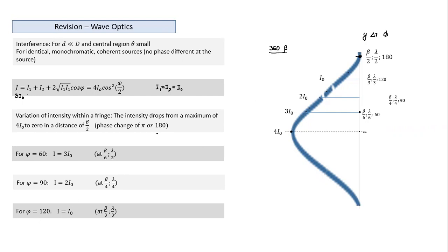At a distance of β/3 — one-third of the fringe width from any bright fringe peak — intensity drops to I0, which is one-fourth of the peak intensity of 4I0. This is the case when two sources are identical. This brings us to the end of the theory part of YDSE. Next, we will do numericals based on YDSE — not very simple ones, but slightly tricky problems.